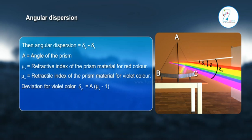Deviation for violet color: δᵥ = A(μᵥ - 1). Deviation for red color: δᵣ = A(μᵣ - 1).